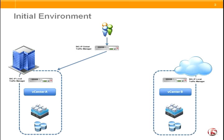In the initial environment we have several components. There are two data centers, each with a complete vSphere environment, and in each data center we have a Big IP local traffic manager which manages the traffic to the application running in the virtual machine. We also have a Big IP global traffic manager which is responsible for directing users to the correct data center where the application is currently residing. In the initial case, users are accessing the application in site A, and vCenter is controlling the management of the application and the virtual machine that it runs on.